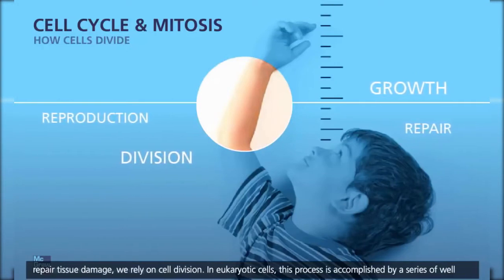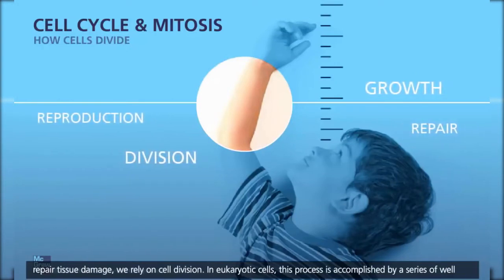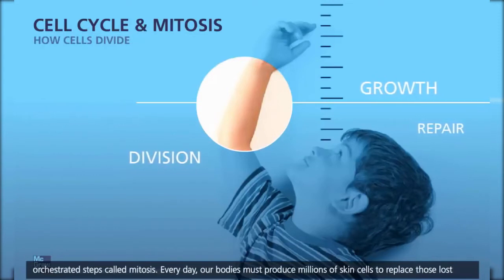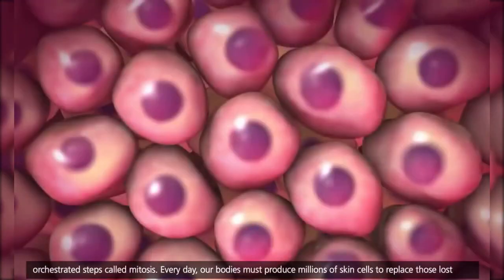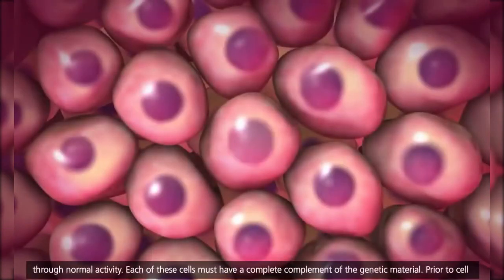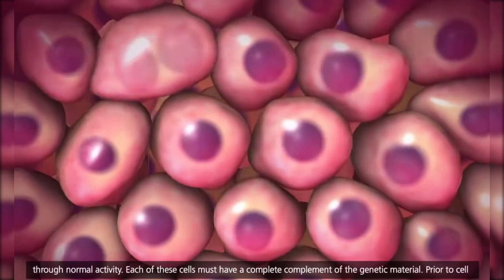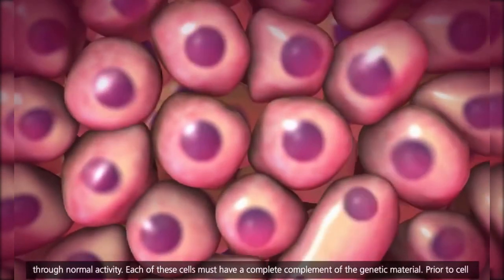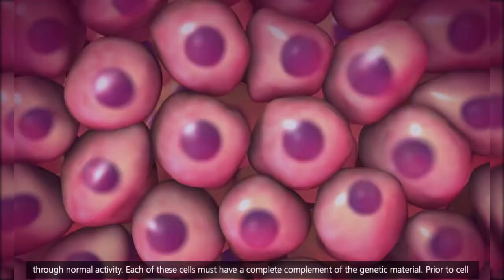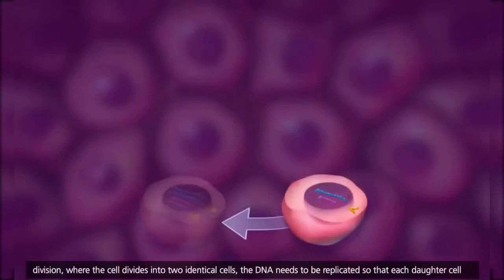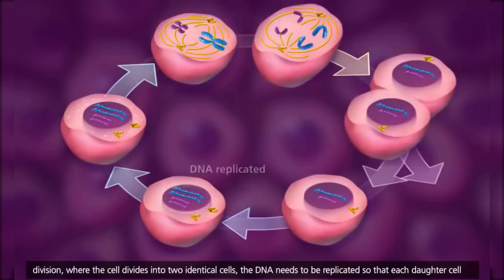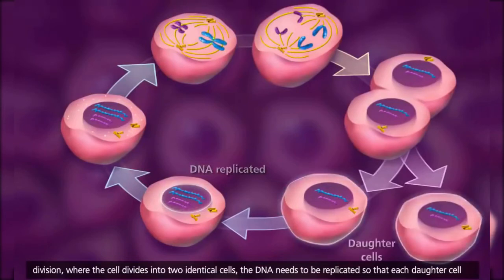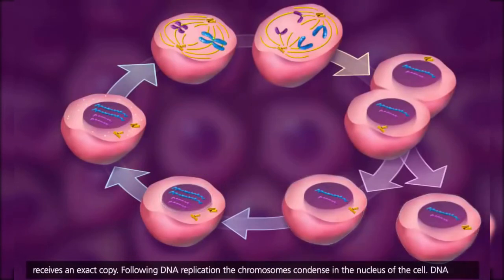In eukaryotic cells, this process is accomplished by a series of well-orchestrated steps called mitosis. Every day our bodies must produce millions of skin cells to replace those lost through normal activity. Each of these cells must have a complete complement of genetic material. Prior to cell division, where the cell divides into two identical cells, the DNA needs to be replicated so that each daughter cell receives an exact copy.